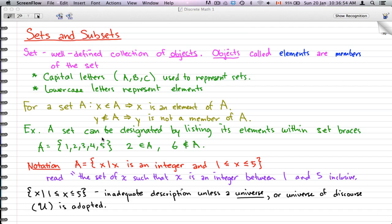For example, a set can be designated by listing its elements within set braces. So look what we have here. We have A equal to {1, 2, 3, 4, 5}.